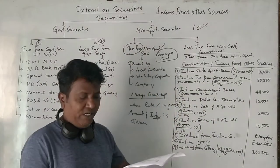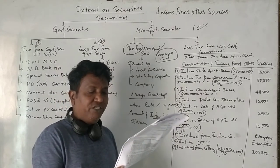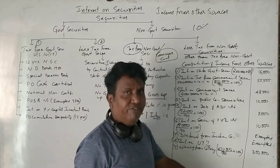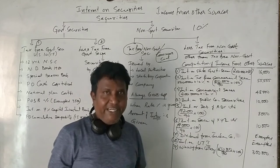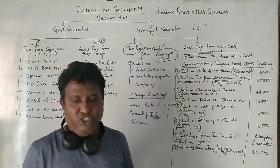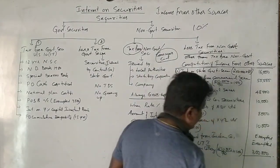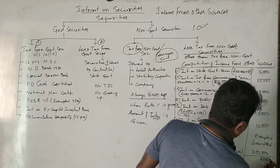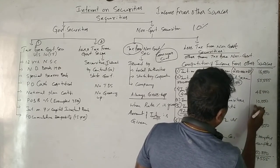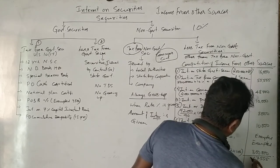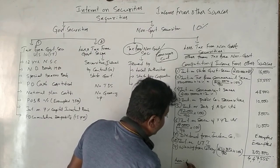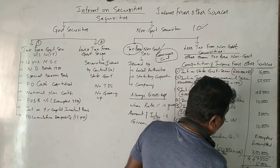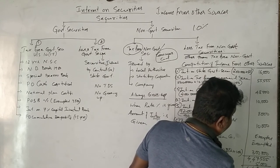At the end, one more point: bank charges 5,000 as collection charges. We have given the bank responsibility to collect interest from various sources and credit it to our account, and the bank is charging 5,000 rupees for this. It is an expense. So we first calculate the gross income from other sources, which comes to 4,47,555. Less bank charges or collection charges: 5,000. Net income from other sources = 4,42,555 rupees.